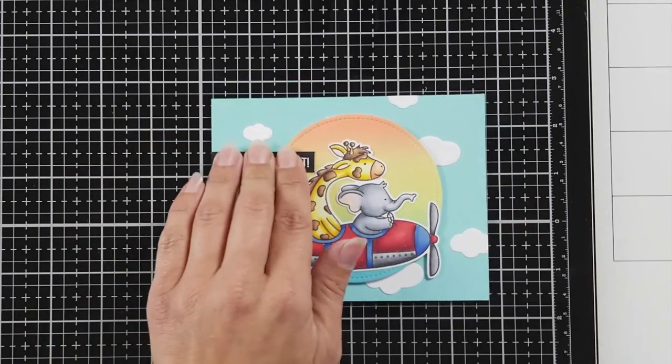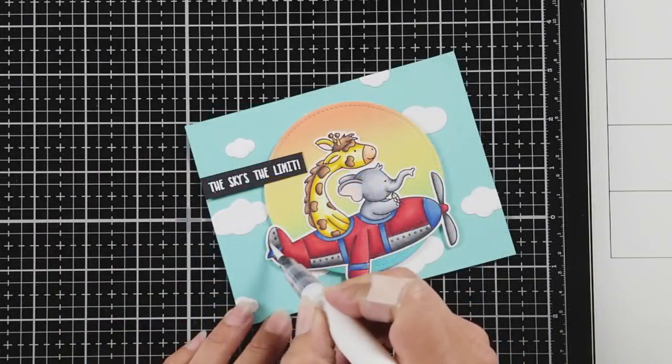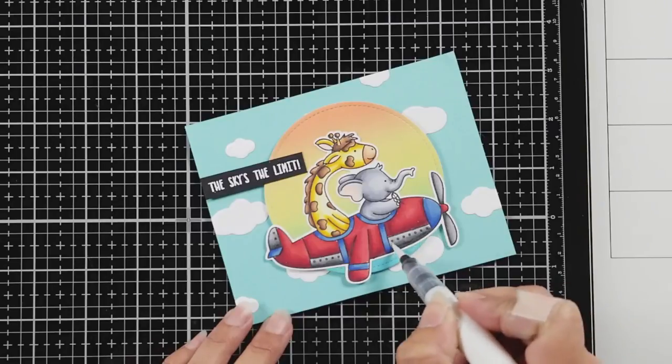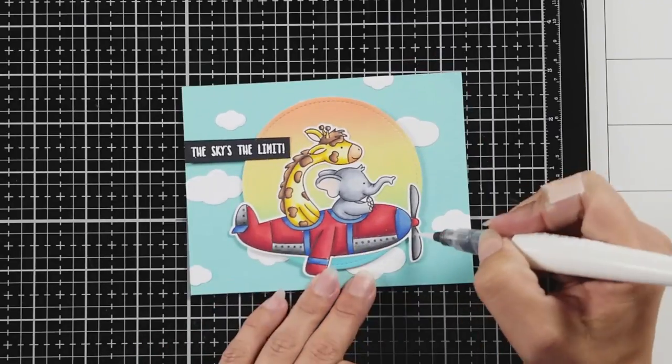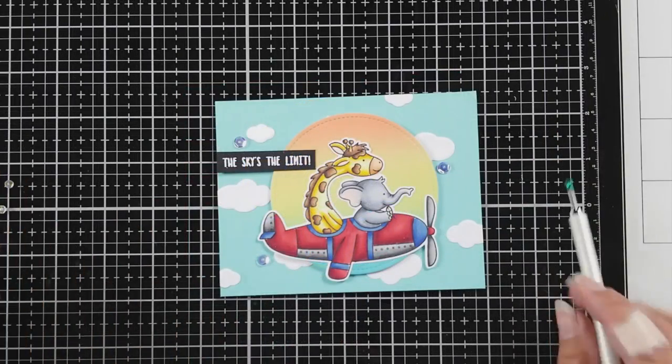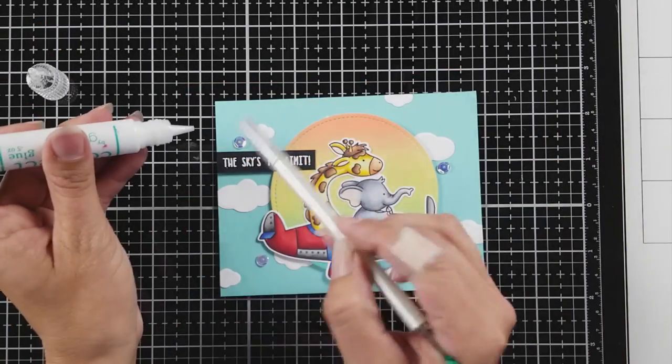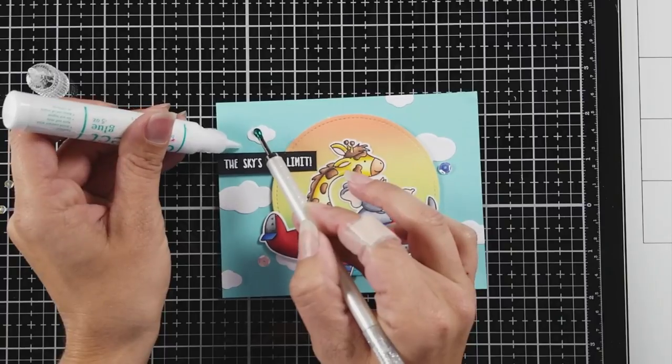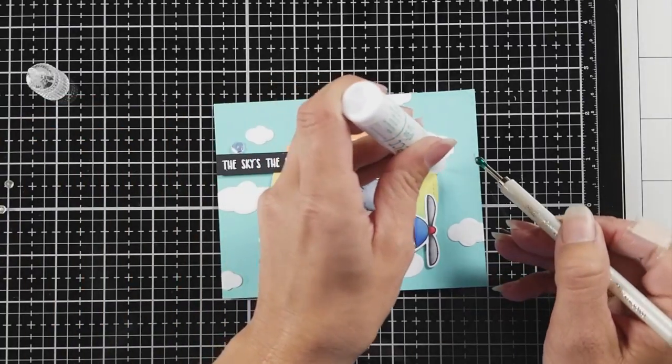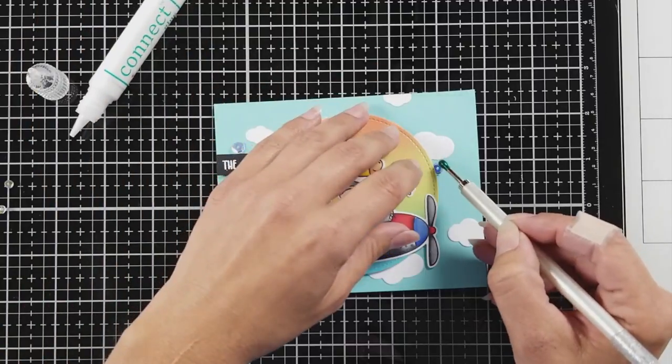And I just had to add a little sparkle, so I'm taking a Nuvo shimmer pen and I'm adding that to my metal pieces of my plane. So this could be for a boy or a girl as a card. And maybe a boy doesn't want sparkle on a plane, but I do. So I did that. And I just had to bring in these sequins. This is from Neat and Tangled. This is the Like Magic Sequins Pack. And I just added those around my image.